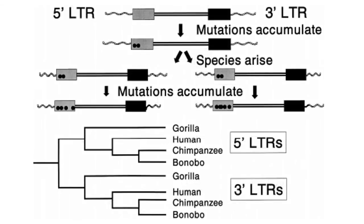Layer 3: Shared mutations among orthologous ERVs and the nested hierarchies they fall into. Since mutations accumulate and fix in populations of organisms, the distribution of shared mutations indicates a sequence of speciation events consistent with that which is indicated by both distribution and LTR-LTR discontinuity.